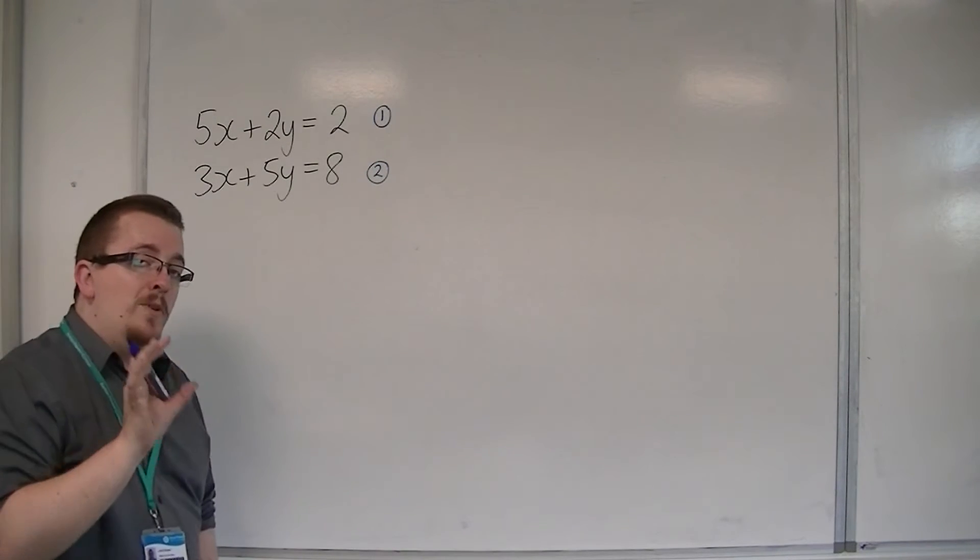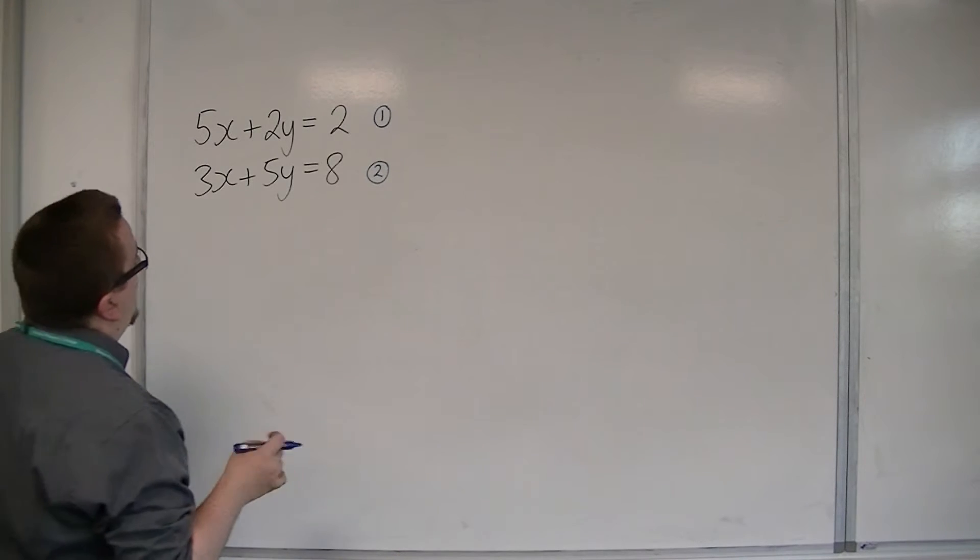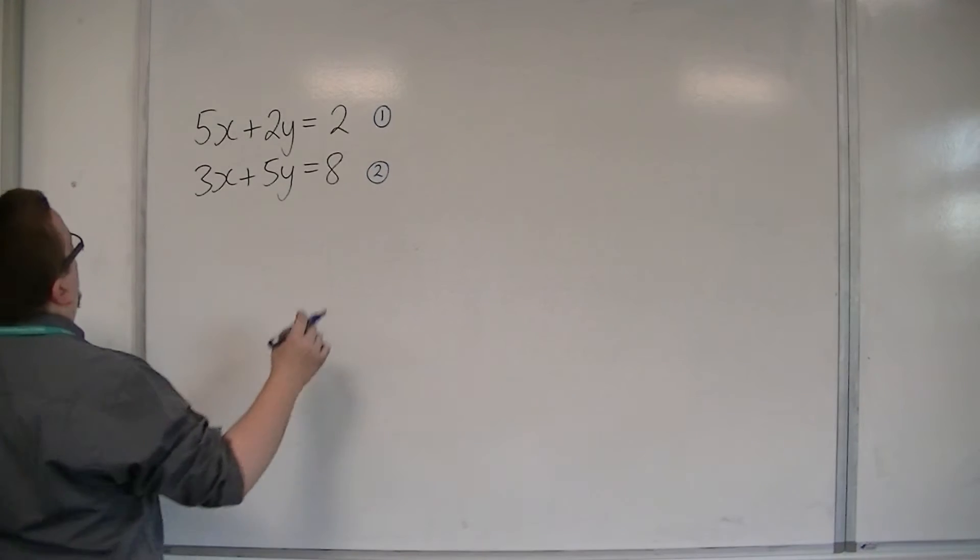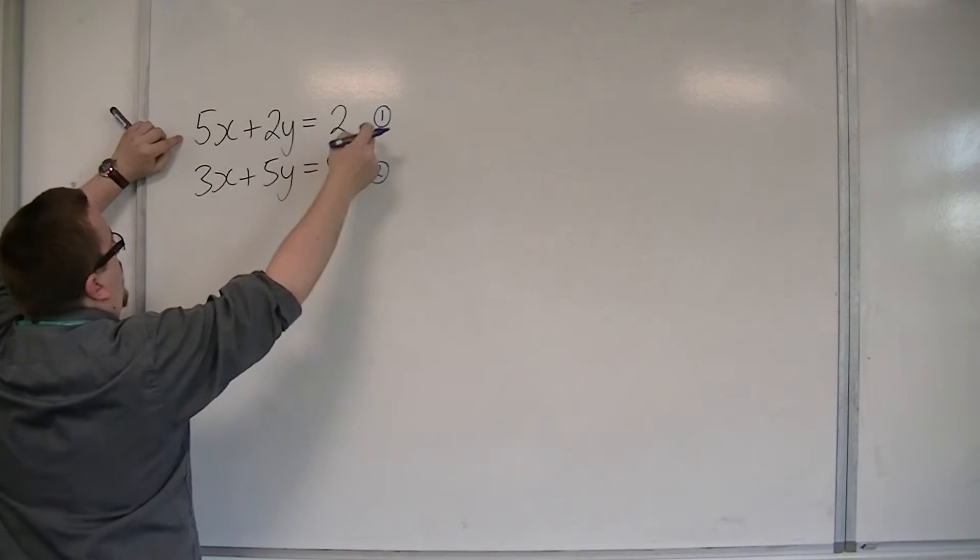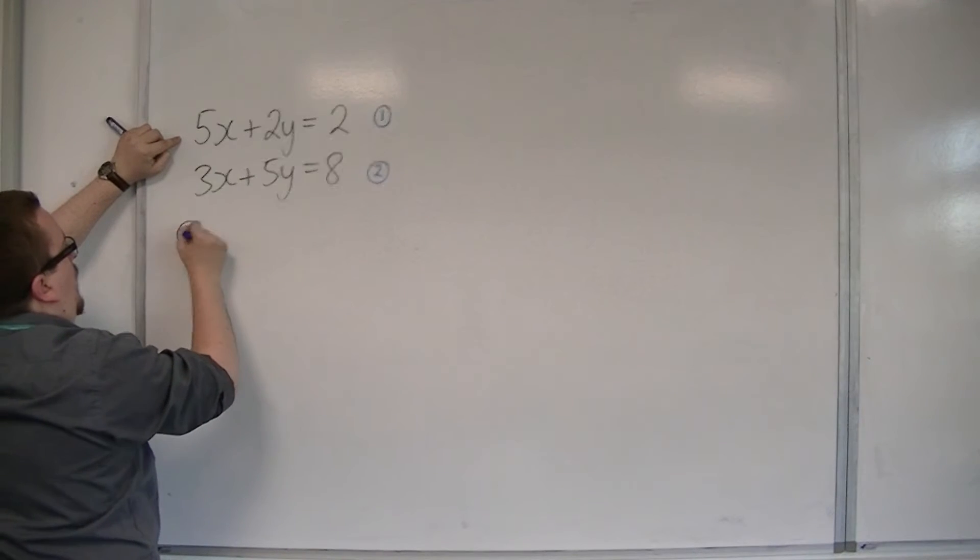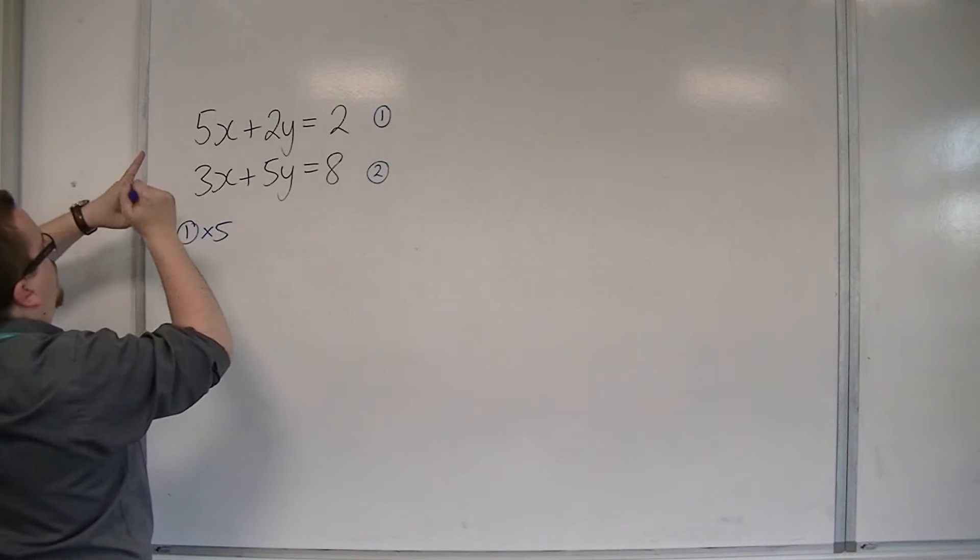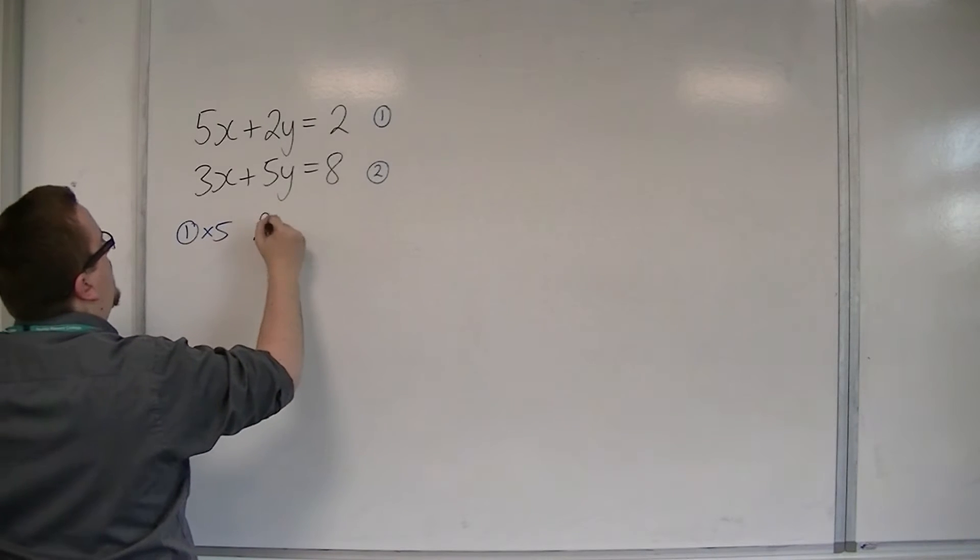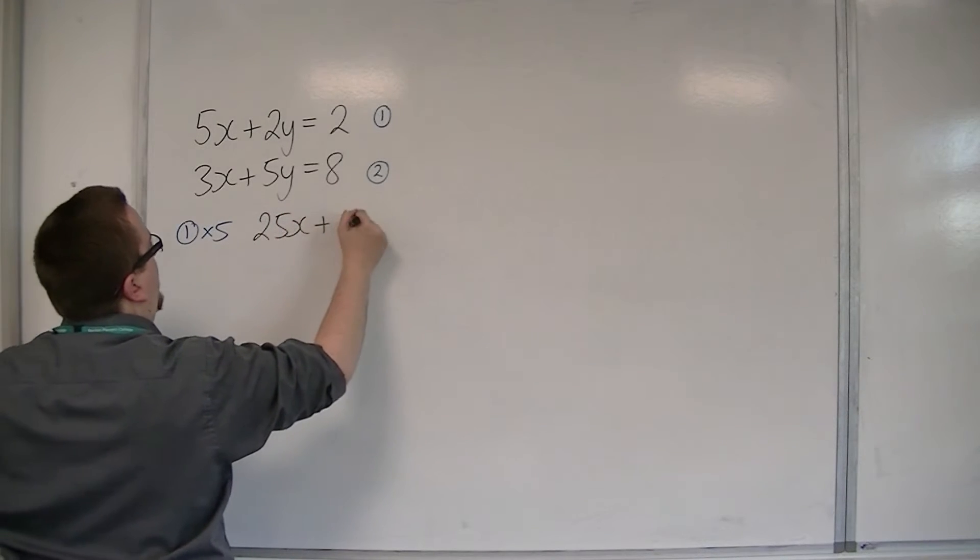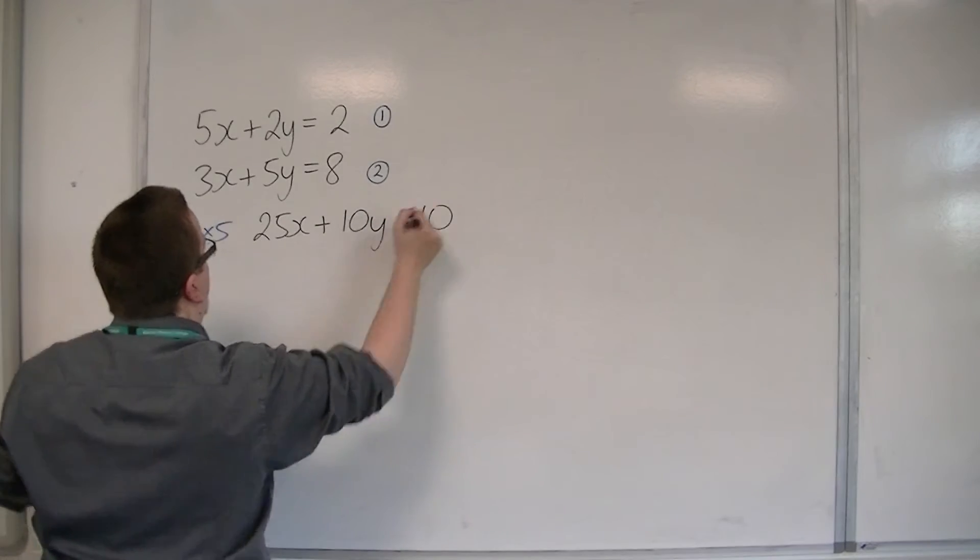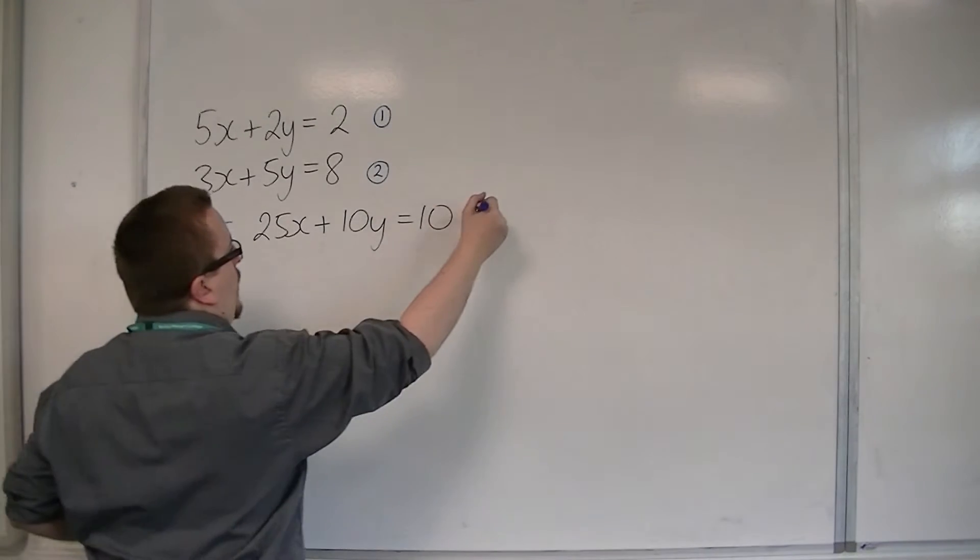I'm going to want to either eliminate the x's or the y's. I'm going to eliminate the y's. So, I'm going to have to multiply equation 1 by 5. 1 times 5. And we're going to get 25x plus 10y is equal to 10. I'm going to call that equation number 3.